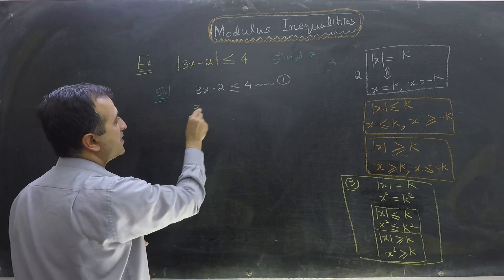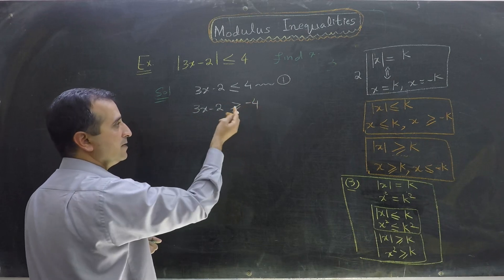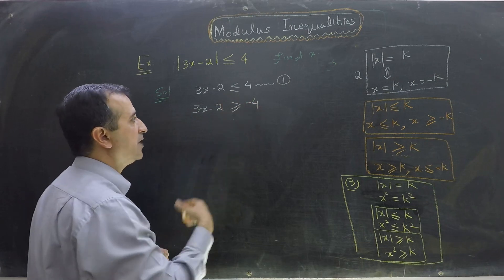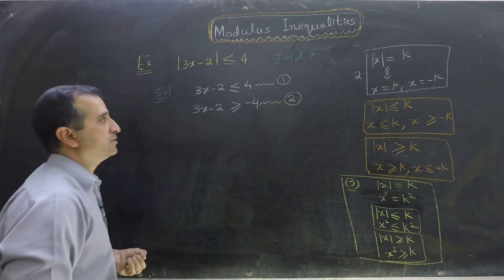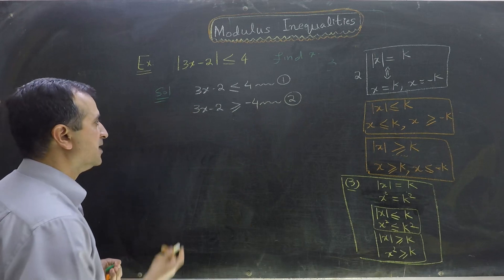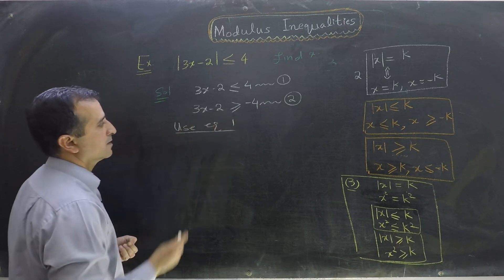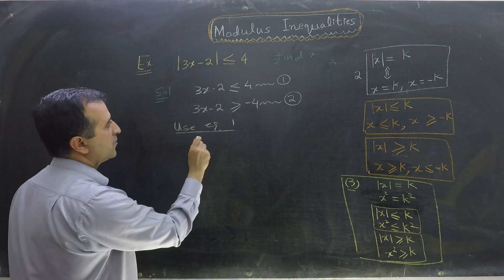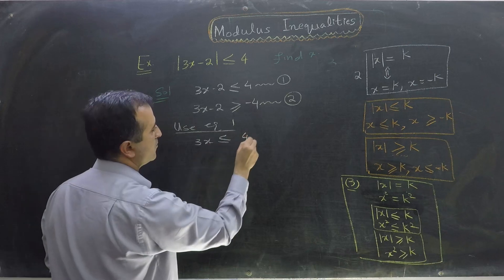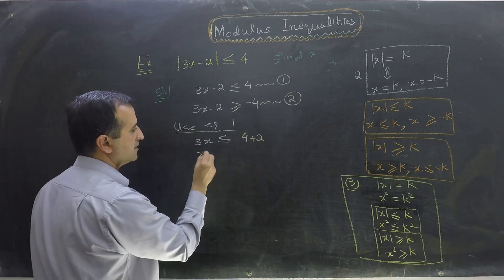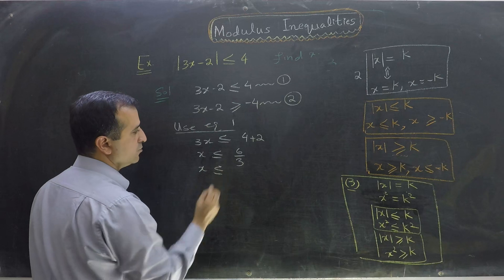Similarly, I write 3x minus 2 is greater than or equal to minus 4, because of the minus sign this inequality switches from less than to greater than. I call this equation number 2. Now solving equation 1: 3x is less than or equal to 4 plus 2, so x is less than or equal to 6 over 3, which gives x is less than or equal to 2.